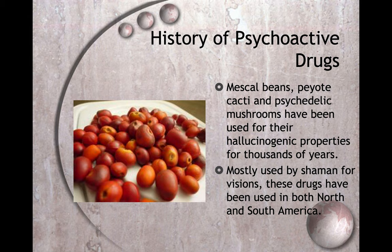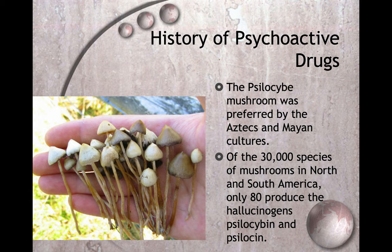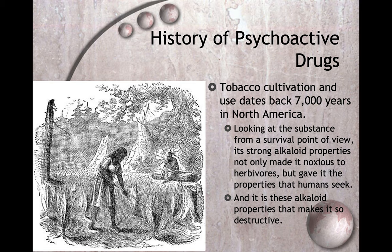Mescal beans, peyote cacti, and psilocybin mushrooms have been used for their hallucinogenic properties for thousands of years, mostly by shamans for visions, in both North and South America. Psilocybin mushrooms were preferred by the Aztec and Mayan cultures. Of 30,000 species of mushrooms in North and South America, only 80 produce the hallucinogens psilocybin and psilocin. I was watching 60 Minutes and they were talking about treating people for depression with psilocybin — that seems to be a new treatment coming out dealing with heavy anxiety and depression.